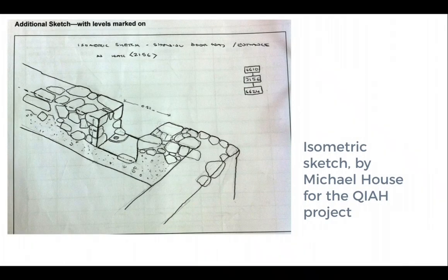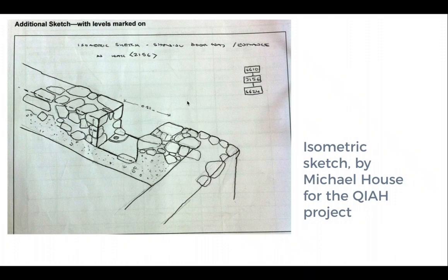This is an isometric sketch — sadly a dying art among archaeologists — also on the back of a context sheet. It shows better than many other depictions the building and standing elevation of a very small doorway in Qatar. It gives the matrix on the side, and you're able to more directly relate the different features within the trench to each other through an isometric sketch.